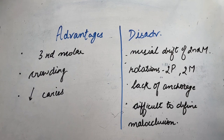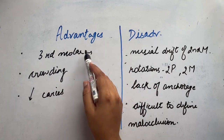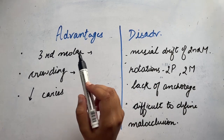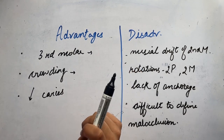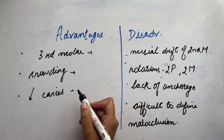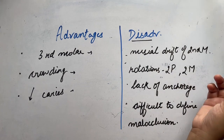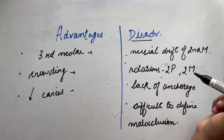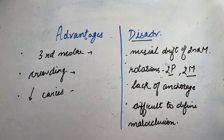The advantages of removing all first molars include prevention of third molar impaction, relief of crowding, and a decrease in the risk of dental caries. However, the disadvantages include mesial drift of the second molar and second premolar into the extraction space, causing rotations of these teeth. Moreover, it was later found that the relief of crowding was not to the extent Wilkinson had claimed.